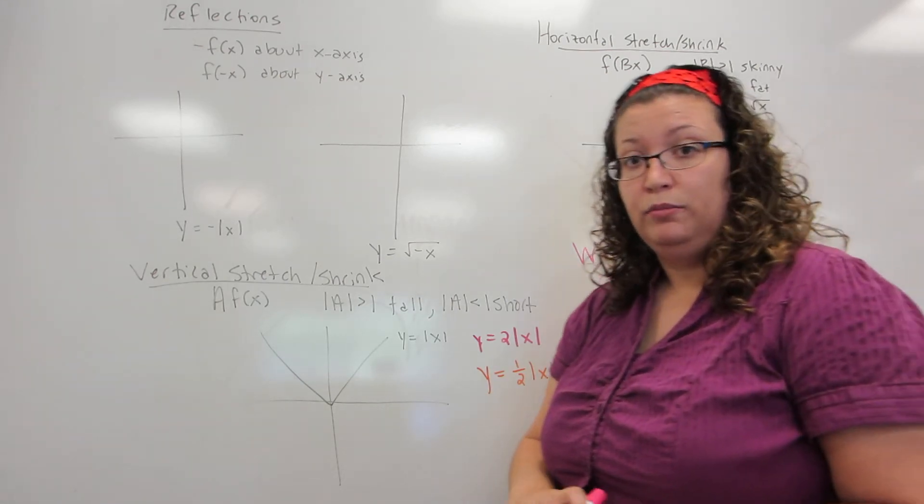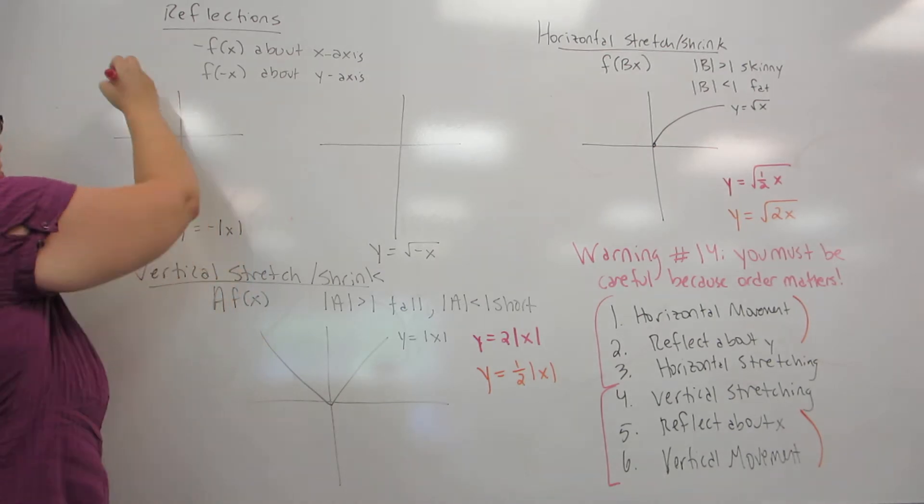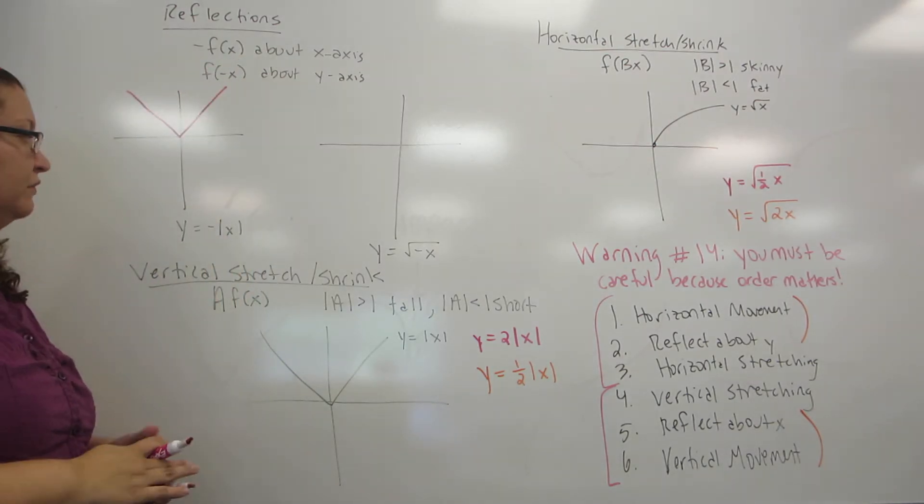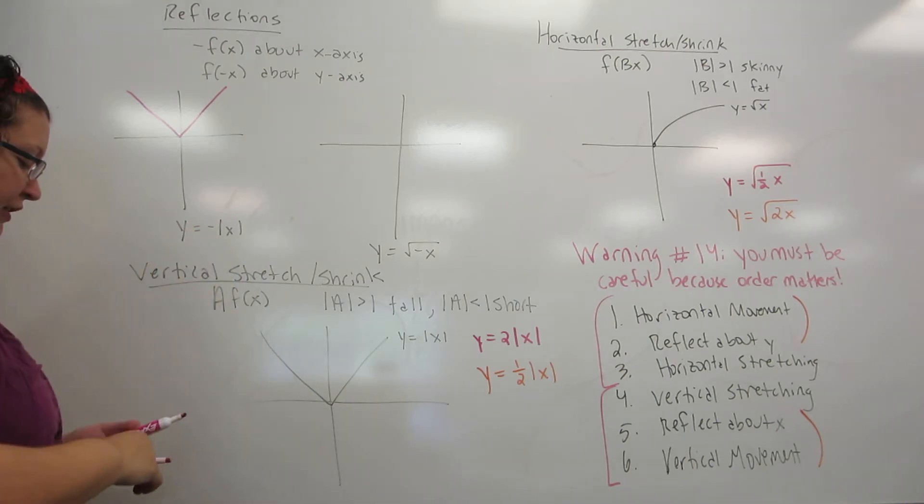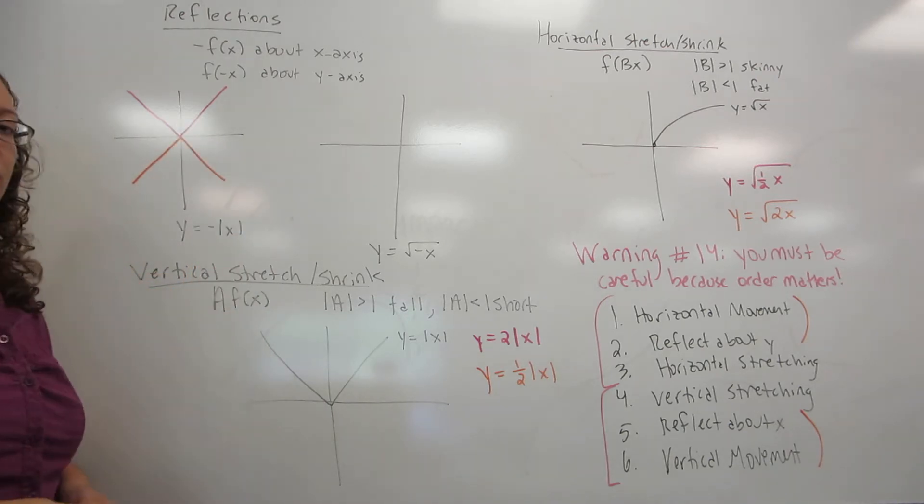So let's look at two different examples. First, we're going to reflect the absolute value of x. If you remember, the original absolute value of x was this v. Because the minus sign is outside the absolute value, we're reflecting about the x-axis. So this would be our new graph.